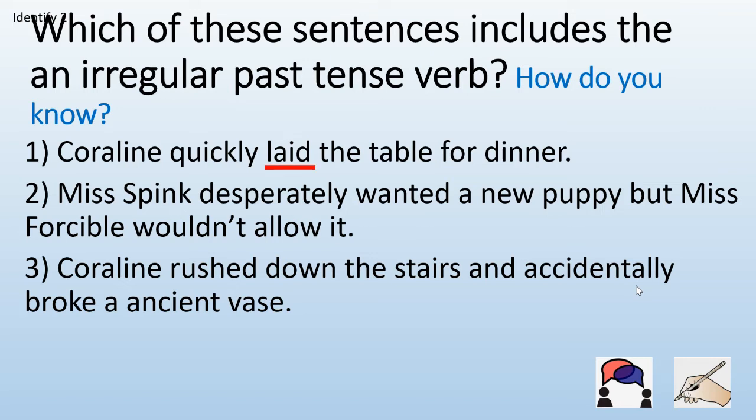Let's have a look. The first one: we have the word laid. So to lay the table, but in the past tense it becomes laid — make note of the spelling here. The second one does not have an irregular past tense verb. It has a regular past tense verb, which is wanted. Wanted is regular because it ends in -ed, so there is no irregular past tense verb in that sentence. The last one: we have broke. To break, and in the past tense, I broke.